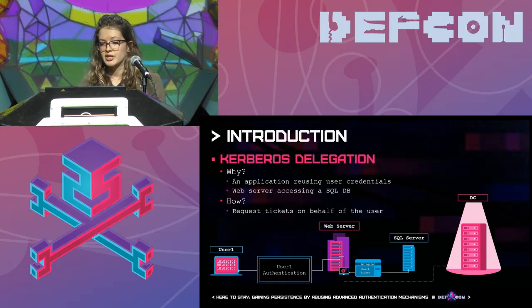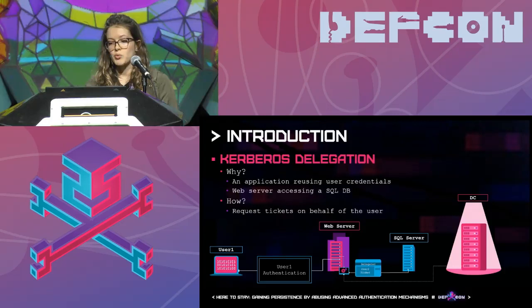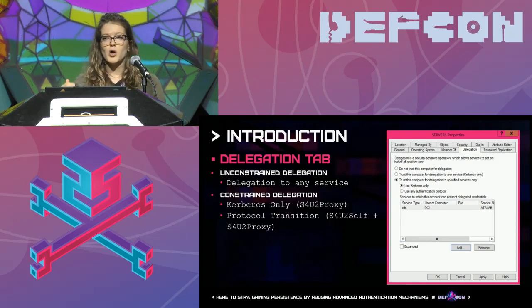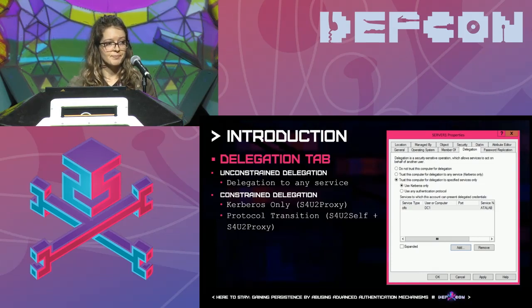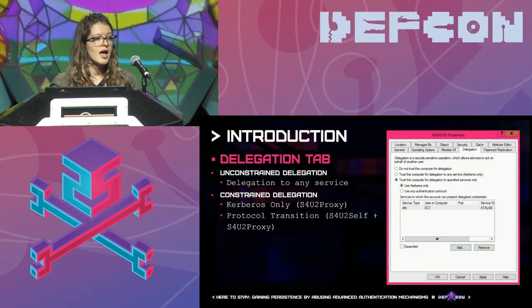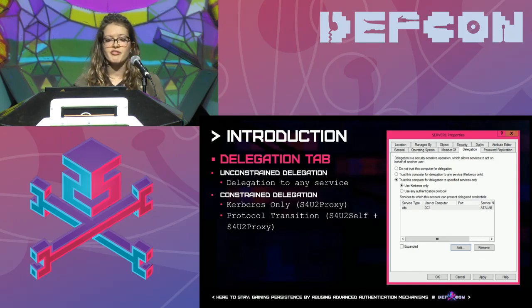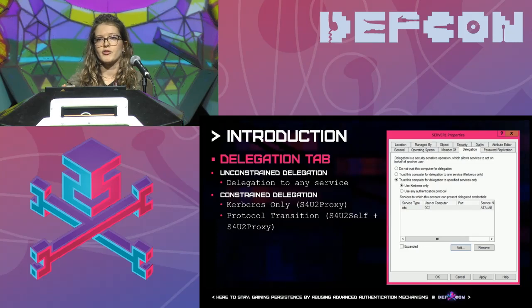Delegation is not trivial functionality since it allows servers to impersonate other users and use their privileges, so defining it requires additional privileges. There are two types: unconstrained delegation, where a single server can request tickets to any service in the domain — which is way too much power and not recommended for non-domain controllers. This is why constrained delegation was introduced: a service can only perform delegation to specific services defined in advance, meaning it can only request service tickets on behalf of users to those specific services. This is the scenario we will focus on today.